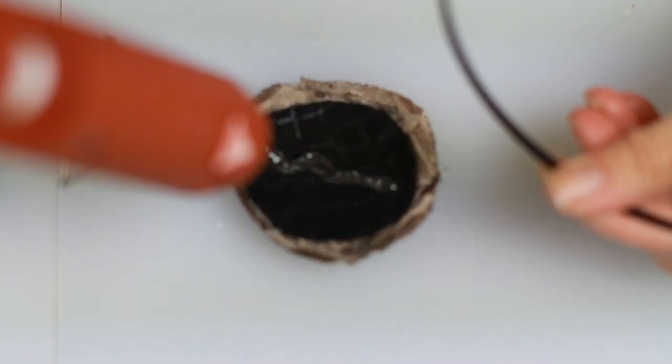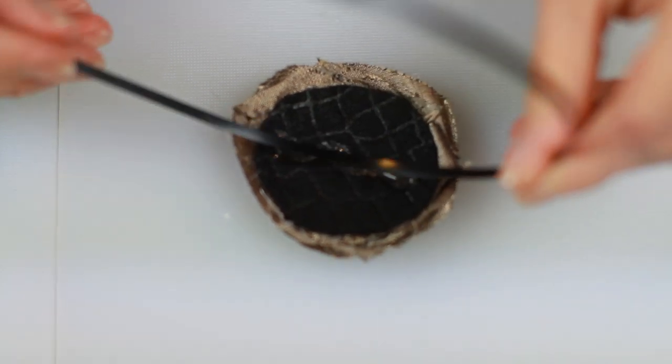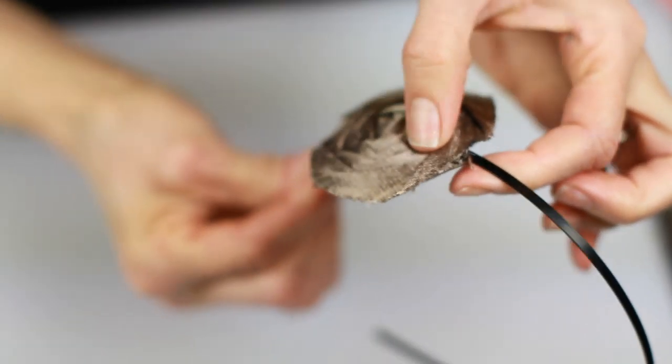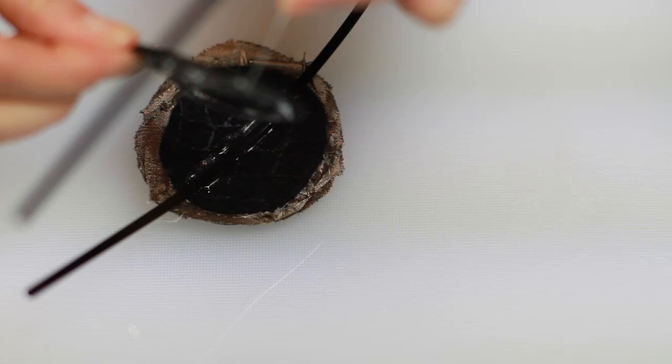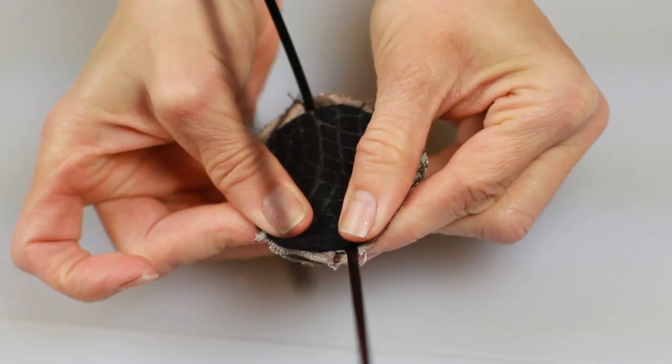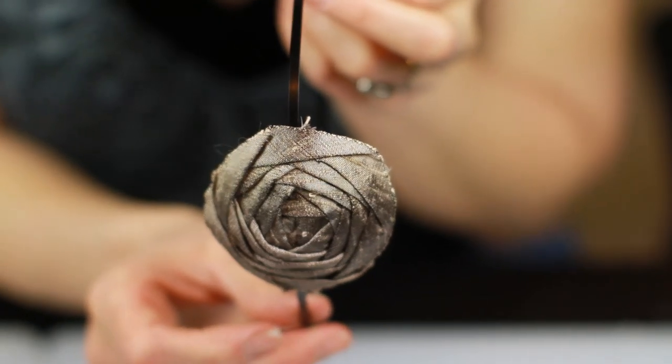I take a little dab of glue, put it on the back of the flower, stick my headband down. You want to let that set for just a second to hold it in place and then you're going to glue the back of the felt for the second piece and just put it over the headband giving you a nice professional finished look on the back. And there you go.